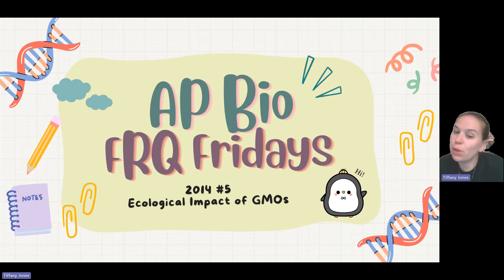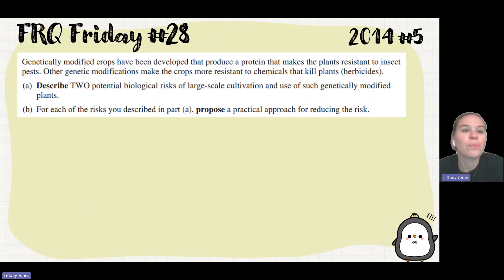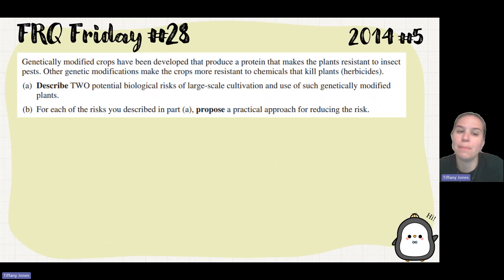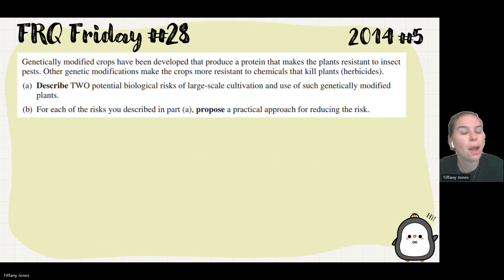Welcome to AP Bio. Today we're looking at 2014 number 5 on the ecological impact of GMOs. Genetically modified crops have been developed that produce a protein that makes the plants resistant to insect pests. Other genetic modifications make the crops more resistant to chemicals that kill plants — herbicides.